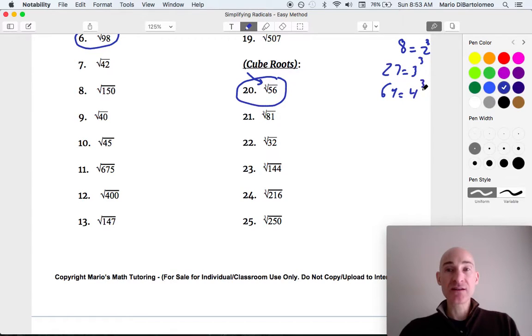So you can memorize these, and that's definitely helpful. Or you can do the prime factorization method, which I'll show you in a moment. But first of all, let's go ahead and break this down. So we can see this is 8 times 7, right? And the reason I picked 8 again is because that's a perfect cube. And the cube root of 8 is 2. And so you can see we're left with 2 and 7 left over. So 2 cubed root of 7.